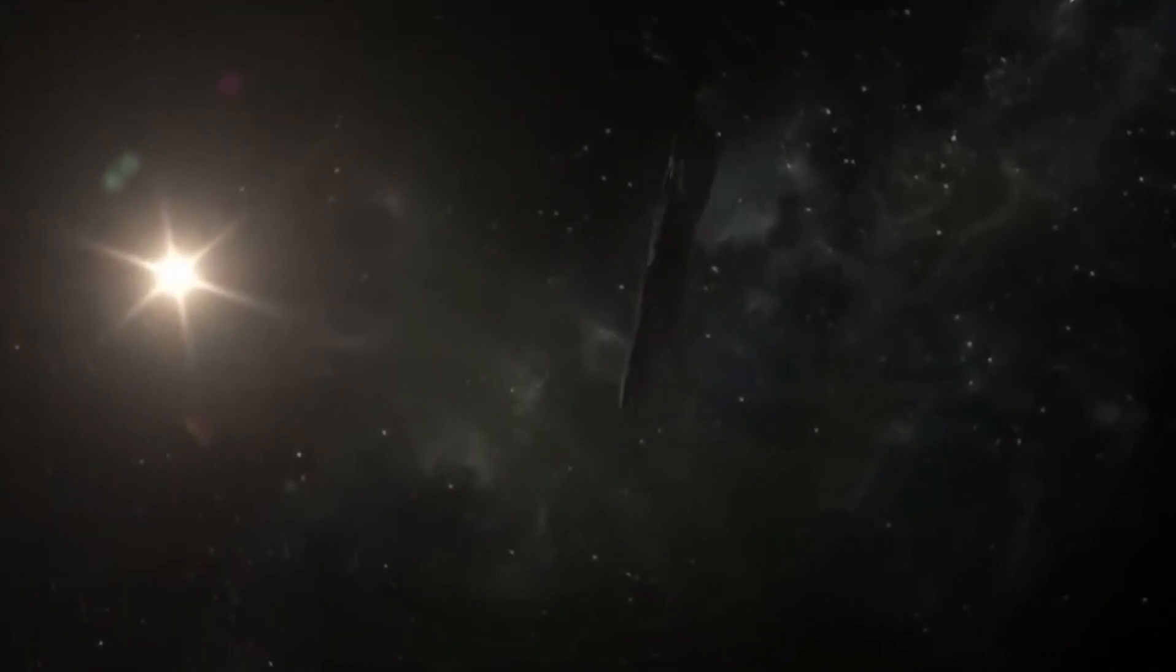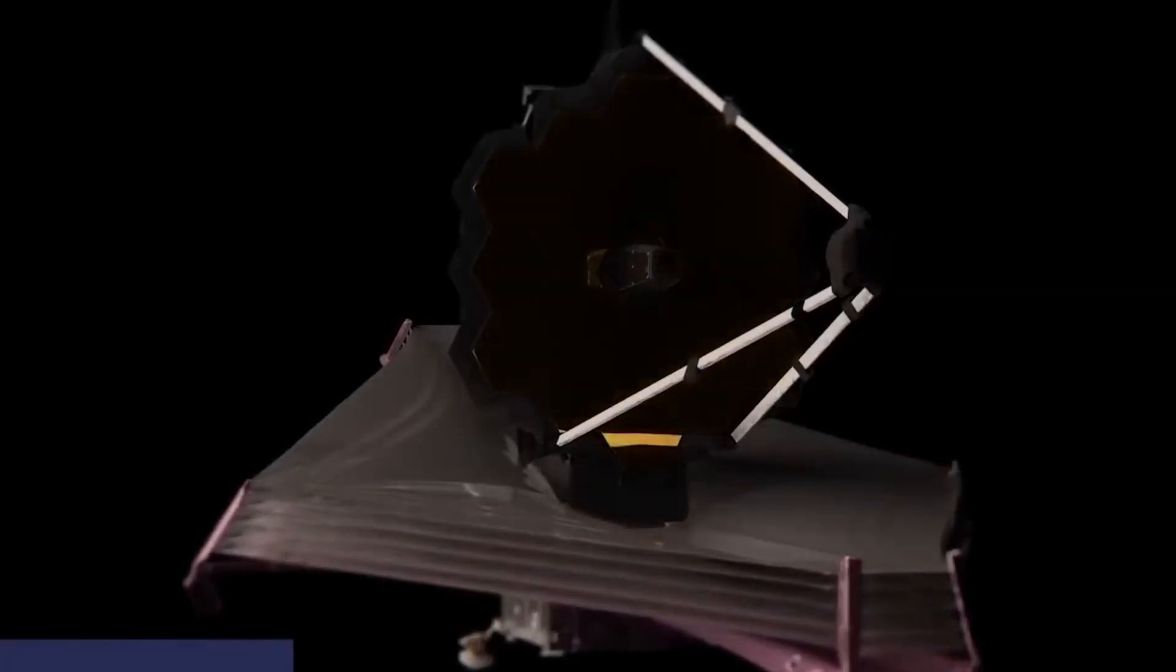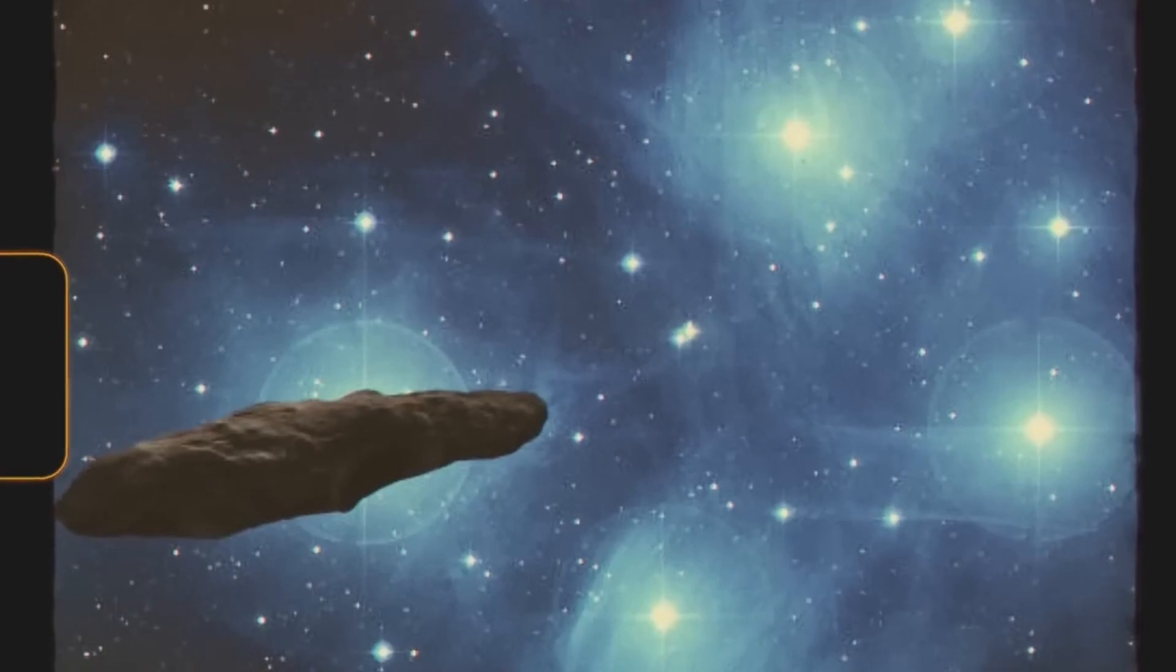The arrival of the James Webb Space Telescope marked a significant milestone in the study of Oumuamua and other celestial phenomena. Equipped with state-of-the-art infrared cameras and advanced instruments, the telescope provided unprecedented insights into Oumuamua's characteristics. The telescope's ability to capture detailed images and analyze the object's composition revolutionized our understanding of interstellar objects.